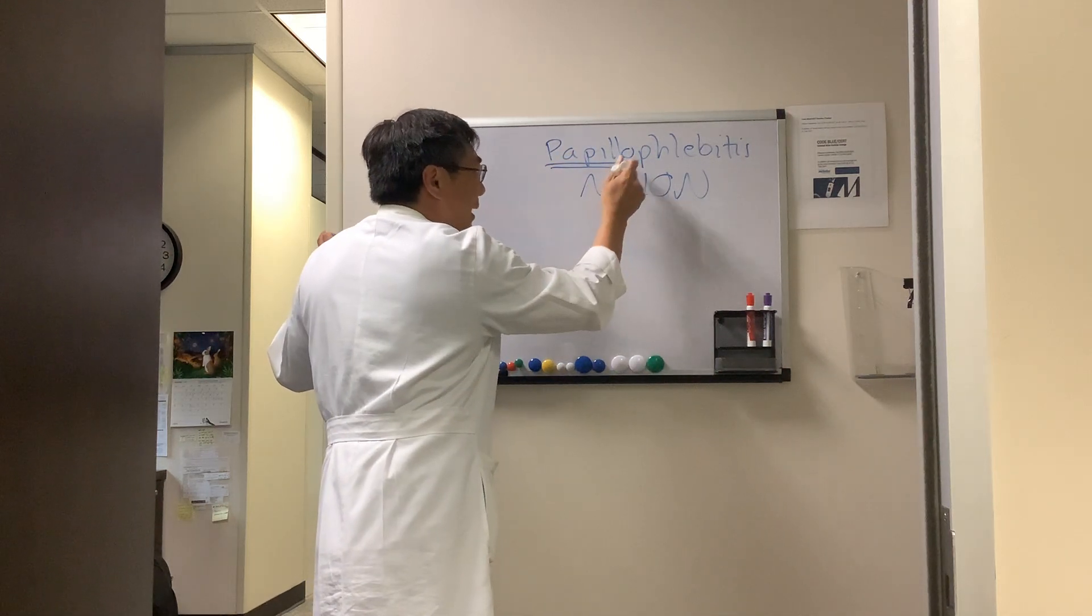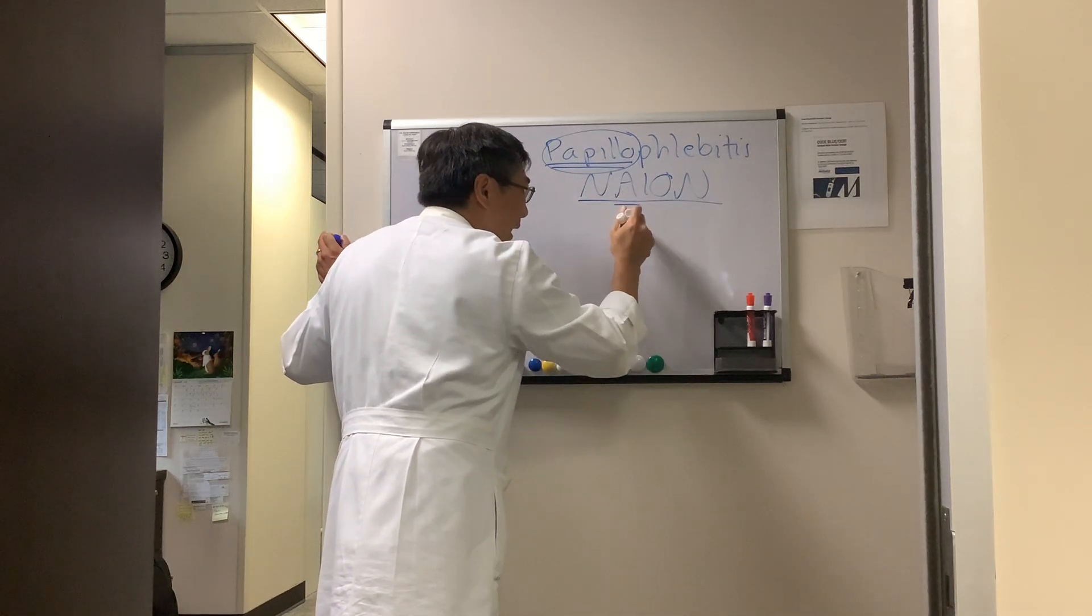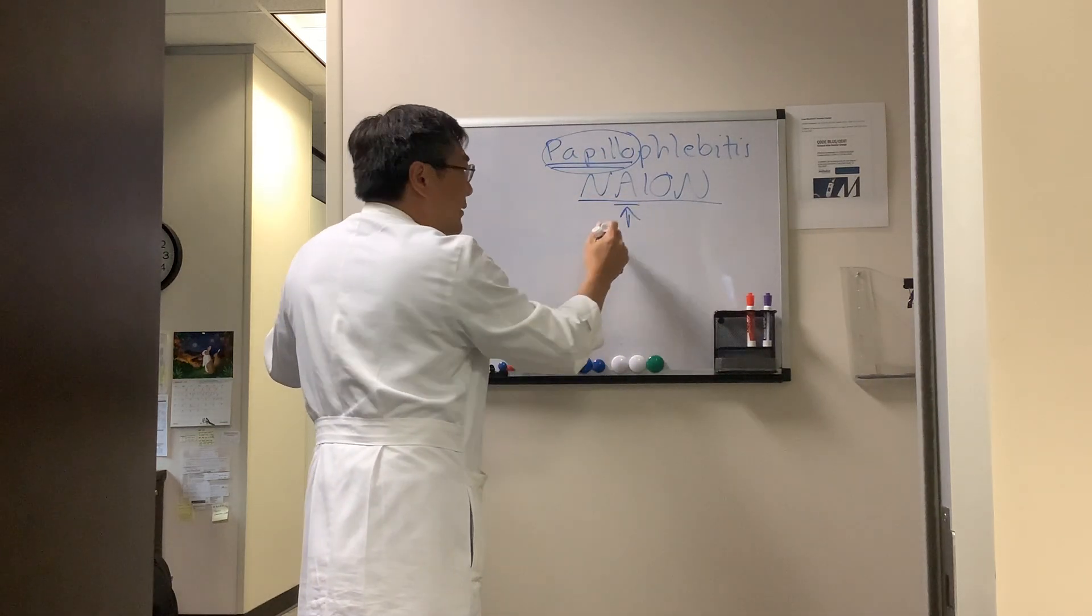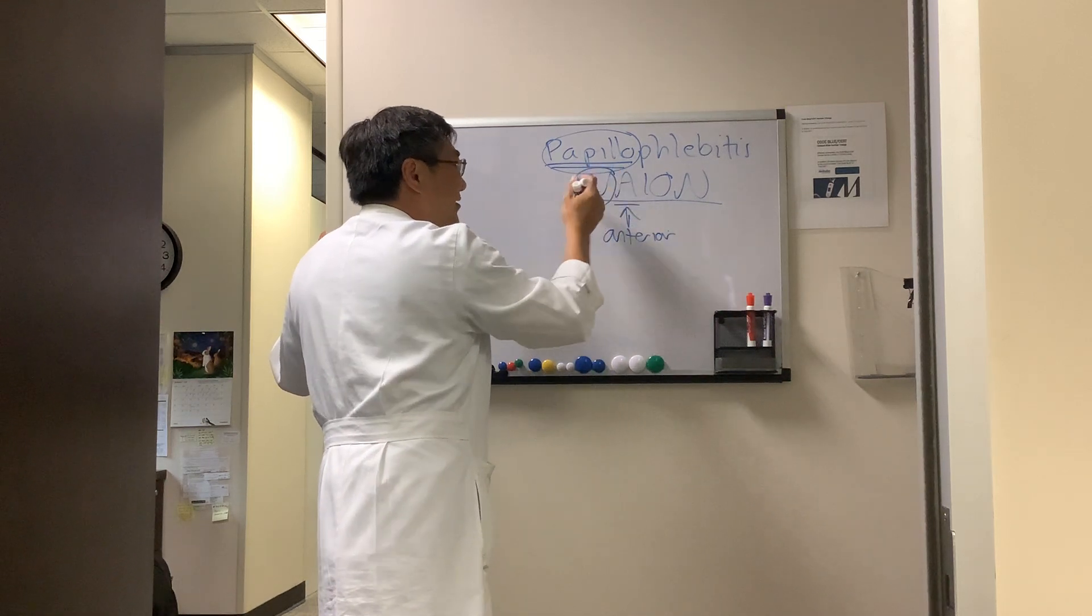In papilloflebitis, the papilla is swollen disc, and in NAION, this A is the swollen disc, which is anterior.